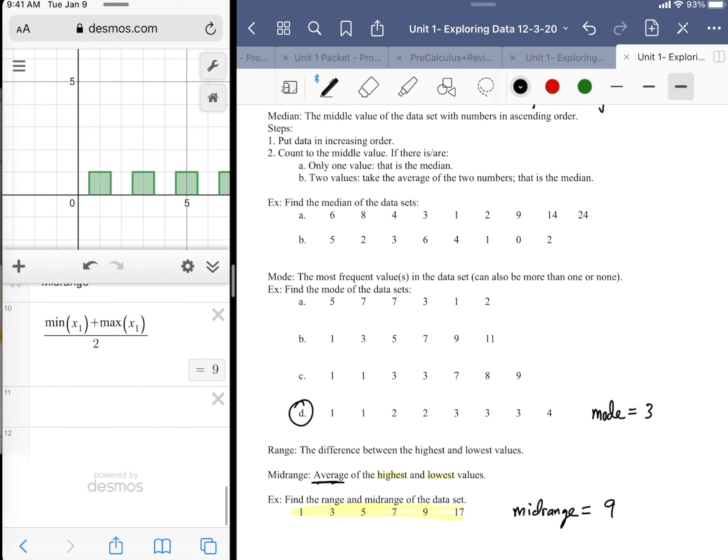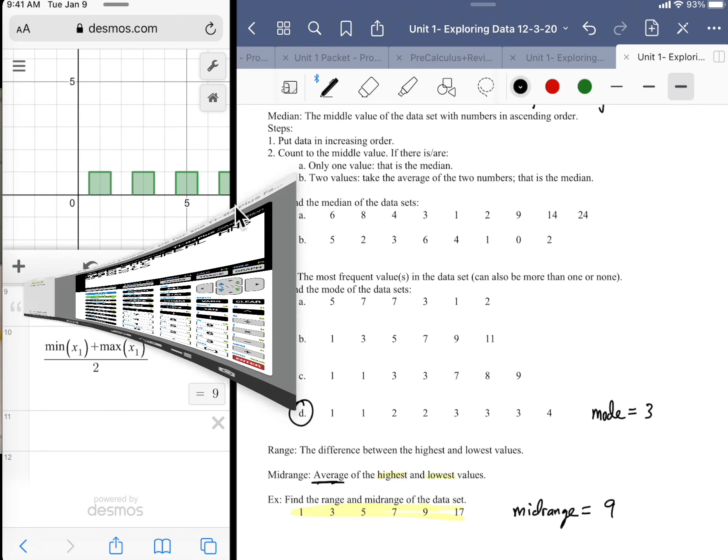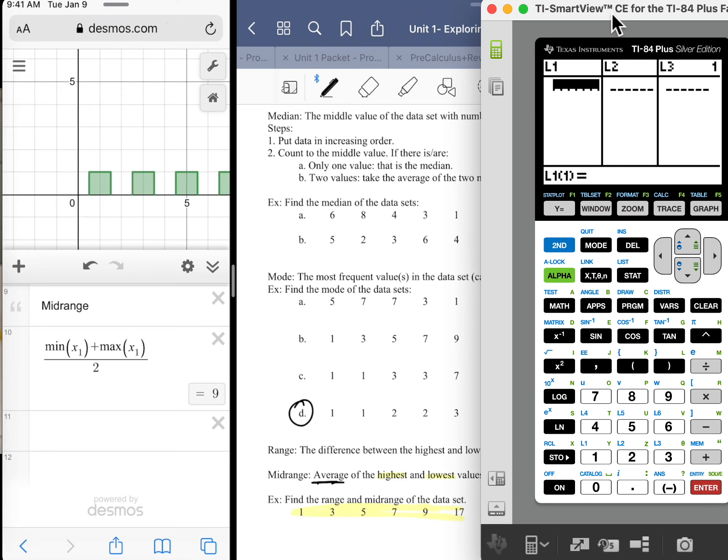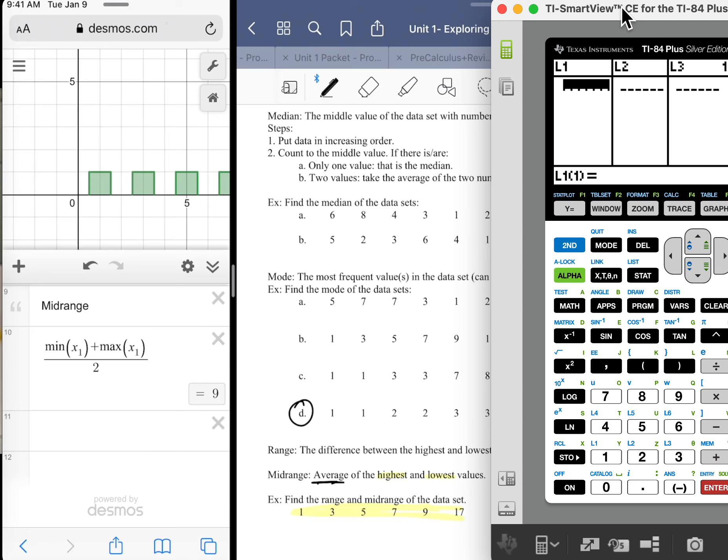But as far as the TI is concerned, just give you the quick version on that. Very straightforward. Same idea. You need to input data. The way to do that is to hit stat. You see option for edit. I have some data in here already, so let me get rid of that. So let's clear that out. So you go up to the column heading, hit clear, and either enter or down. Either way, it'll wipe out the entire column. You don't want to hit delete. And then you just type in your data points. In this case, 1, 3, 5, 7, 9, and 17.